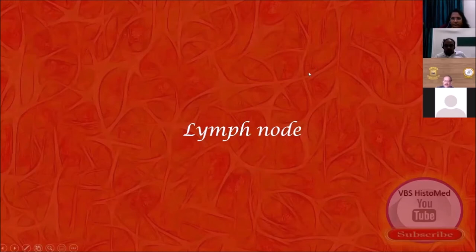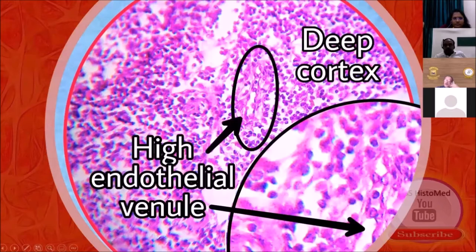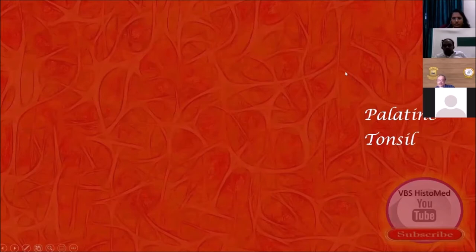This lymph node is a transition slide. Among the commonly missed items in live microscopy in a routine H&E class is this particular structure in the deep cortex — it is called the high endothelial venule. When I checked this in the literature, it has a certain amount of selective permeability to certain cell types, hence it has a lot of clinical significance.